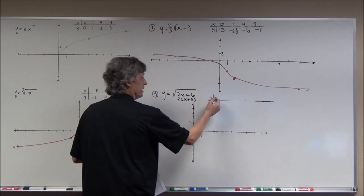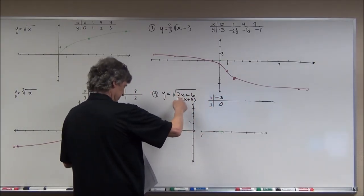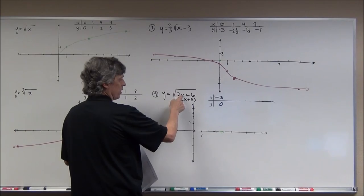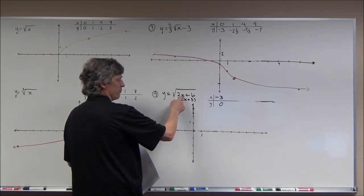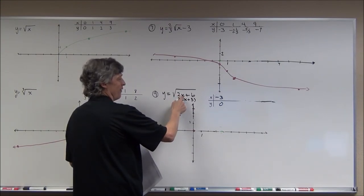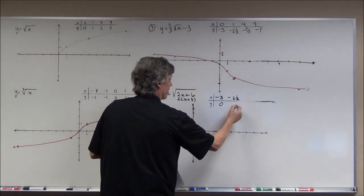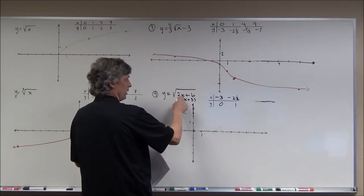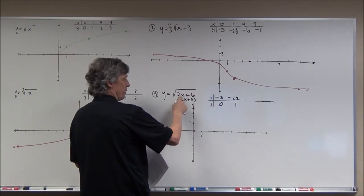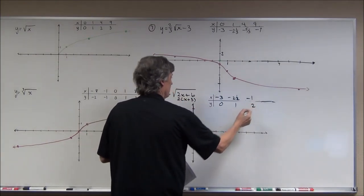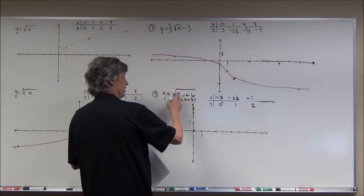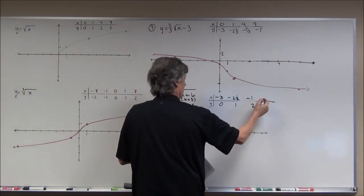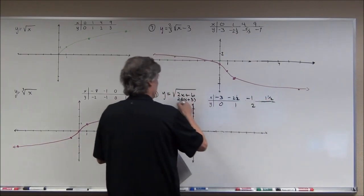To get 0 inside I need x = −3. To get 1 inside I need x = −2.5 because 2(−2.5) + 6 = 1. To get 4 inside I need x = −1 because 2(−1) + 6 = 4. To get 9 inside I need x = 1.5 because 2(1.5) + 6 = 9. So my x-values are −3, −2.5, −1, and 1.5.